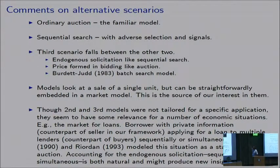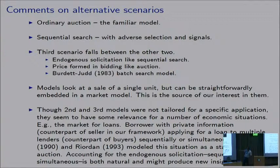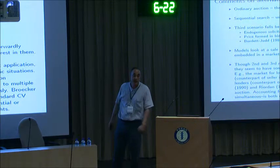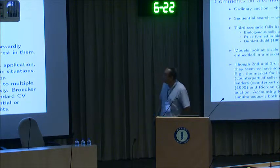The ordinary auction is the familiar model. Sequential search is also familiar, except here it has adverse selection and buyer signals. The third scenario is somewhat less familiar — it falls between the two. There is endogenous solicitation like in sequential search, but the price is formed by bidding like in an auction. If you are familiar with the model of Verdet and Jad from Econometrica 1983 — the batch search model — you can think of this auction with endogenous solicitation as Verdet and Jad with an added element of adverse selection.